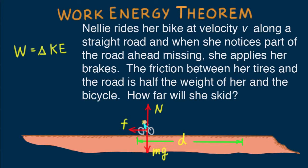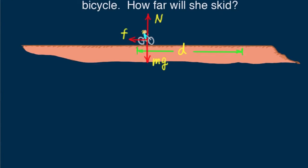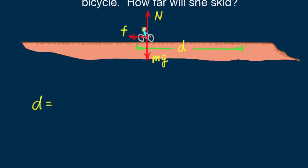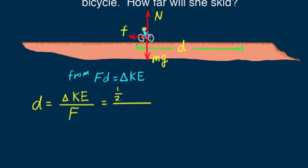What are we looking for? We're looking for distance, so we write D equals. All we're given are her speed and the amount of friction that will stop her. What relationship do we know that involves speed and distance? The work-energy theorem: work equals the change in kinetic energy. From that, D equals delta KE over F. The force in this case is friction, and we're told friction is half the weight of Nellie and her bike — that's half Mg.